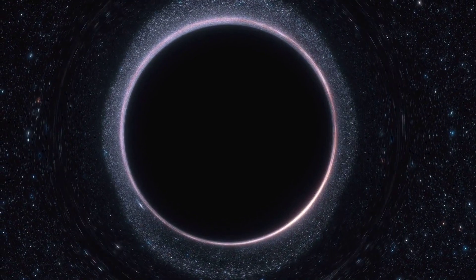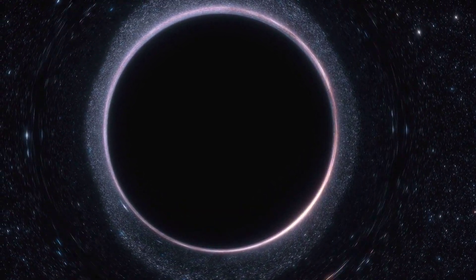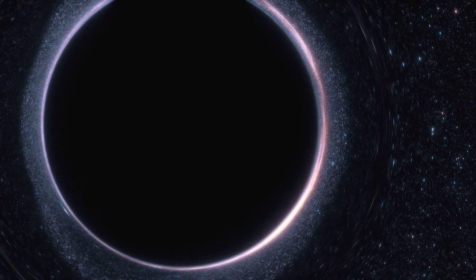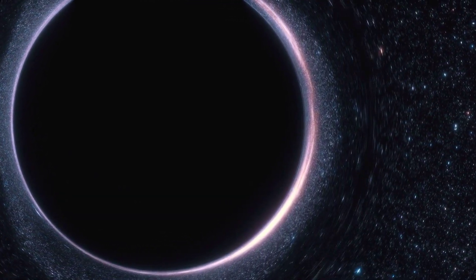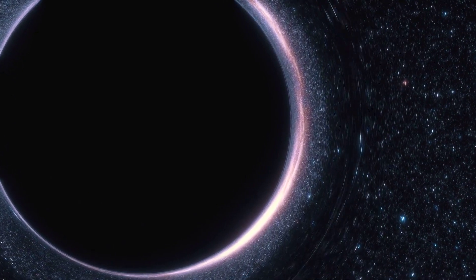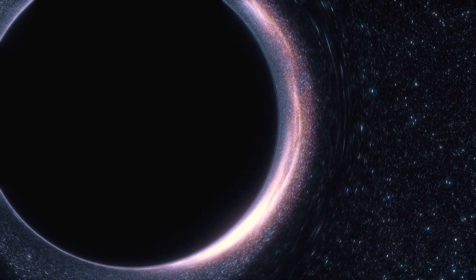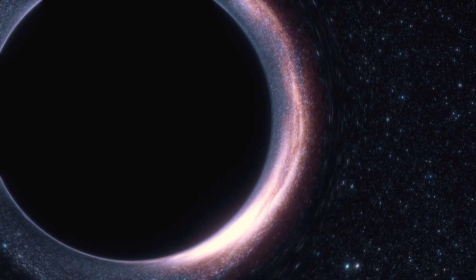And there you have it, folks, that's why light bends near a black hole. It's all because of the incredible warping of space-time caused by the immense gravitational force of these mysterious cosmic objects. We hope you enjoyed this journey into the world of black holes and light, and that you now have a better understanding of this fascinating phenomenon.